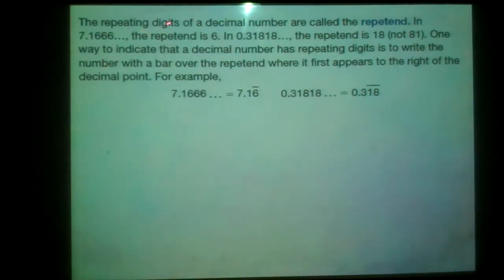Now, the repeating digits of a decimal are called the repetend. So in 7.1666, the repetend is 6. In 0.31818 and so forth, the repetend is 18, not 81. One way to indicate that the decimal number has repeating digits is to write the number with the bar over the repetend where it first appears to the right of the decimal point.